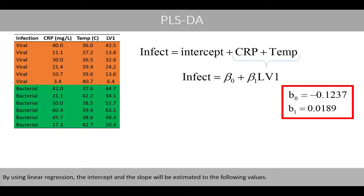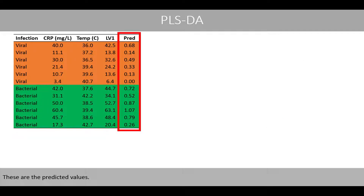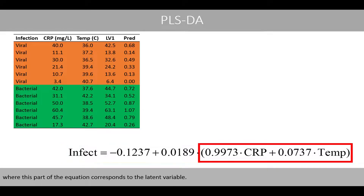By using linear regression, the intercept and the slope will be estimated to the following values. If we plug in the values for the latent variable, we can now calculate the predicted values. Note that these predicted values can also be calculated by the following equation, where this part of the equation corresponds to the latent variable.